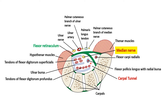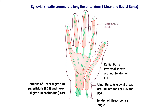Lateral to these tendons is the tendon of flexor pollicis longus, enclosed in its own synovial sheath known as radial bursa. The median nerve passes through this restricted space, which is already containing nine tendons, and this median nerve may get compressed if there is swelling due to involvement of any of the soft tissue passing through the carpal tunnel. This diagram shows the ulnar bursa enclosing all eight tendons of flexor digitorum superficialis and flexor digitorum profundus, continuous with the digital synovial sheath of the little finger, and the radial bursa enclosing the tendon of flexor pollicis longus.